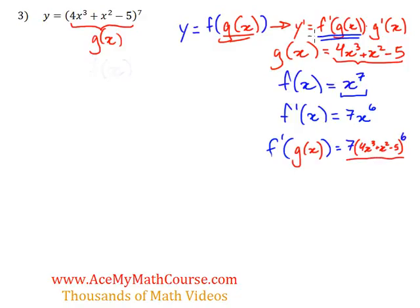Then we multiply all of this by g'(x). And what is g'(x)? Well, the derivative of this will be 4 times 3 is 12. Then we subtract 1 from the 3, so we get 12x². The derivative of x² is just 2x.